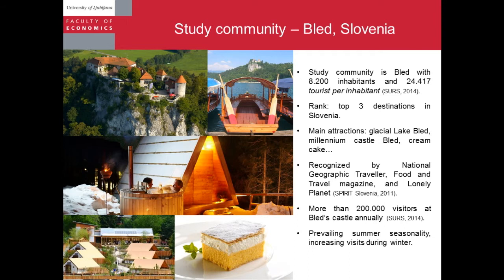Just to briefly describe the study community: this is the town and destination of Bled, which has around 8,000 inhabitants. In the peak season there are 24,000 tourists per inhabitant at the destination. Bled is ranked among the top three destinations in Slovenia because of its main attractions — the Glacial Lake Bled, its Millennium Castle Bled, and the Cream Cake — some of which we can see on the slides. The destination has been recognized by National Geographic Traveller, Food and Travel Magazine in the UK, and Lonely Planet. The castle hosts more than 200,000 visitors annually and hasn't reached its peak, so we expect this number to grow. Visitor numbers grow during summer, which is the prevailing seasonality period.